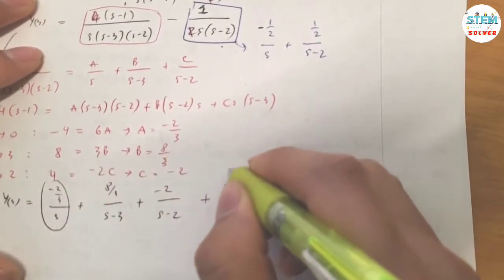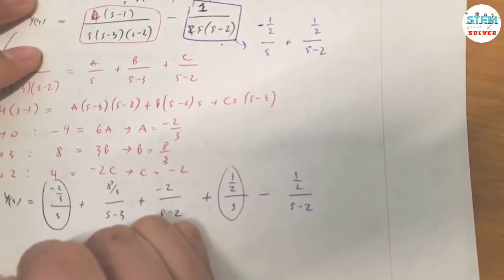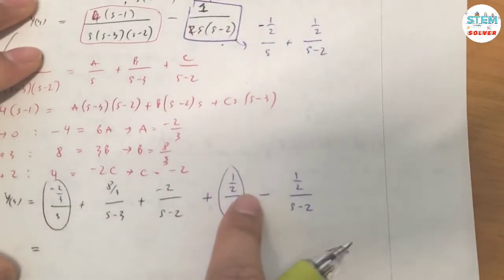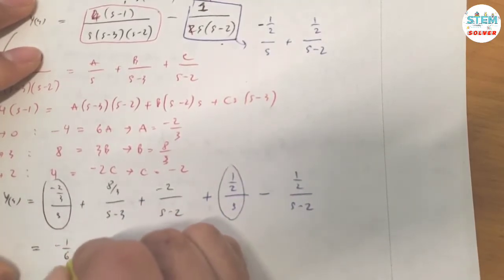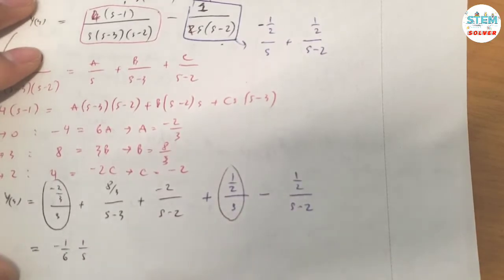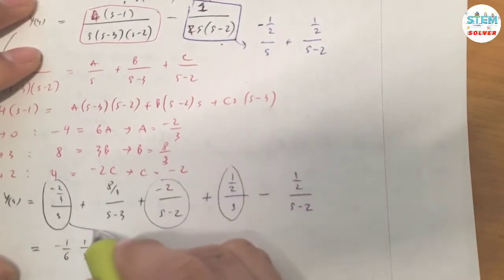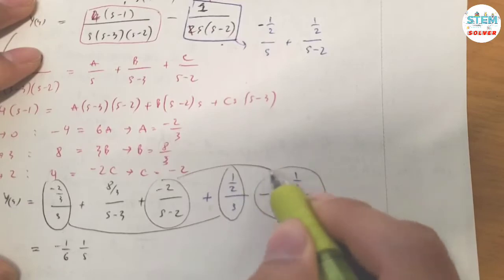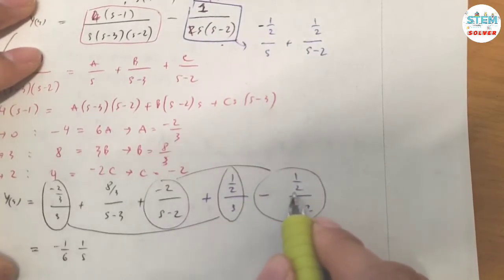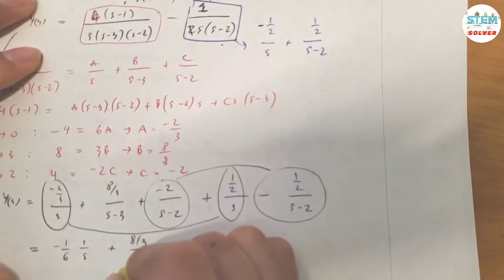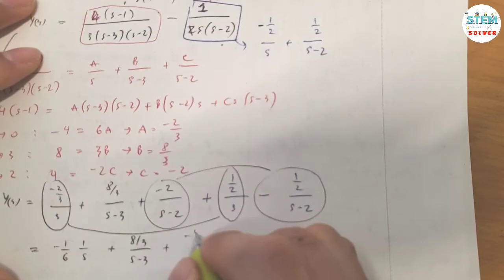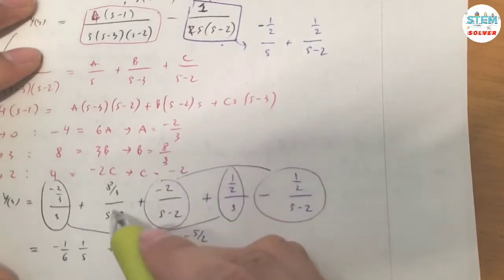Now combine like terms. Negative two-thirds plus one-half gives negative one-sixth times one over S. For the (S minus 2) term: negative two minus one-half gives negative five-halves. So Y(S) equals negative one-sixth over S plus four-thirds over (S minus 3) minus five-halves over (S minus 2).